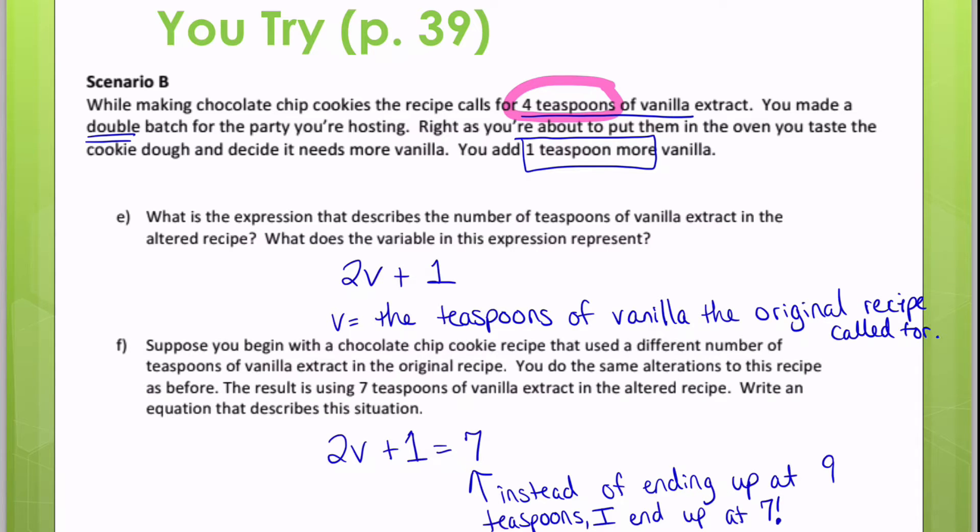For E and F, you're going to see that I've already filled these in. So you can go ahead and check yours with mine. The expression would be 2V plus one. And again, V stands for the teaspoons of vanilla that the original recipe called for. Again, we already know what this is. V is four in this scenario.